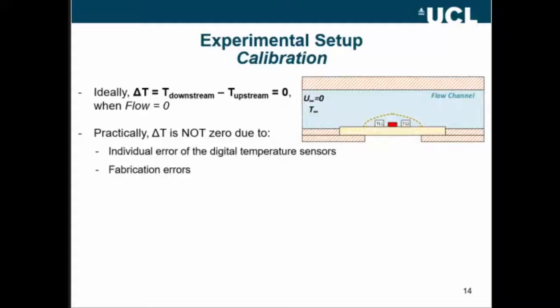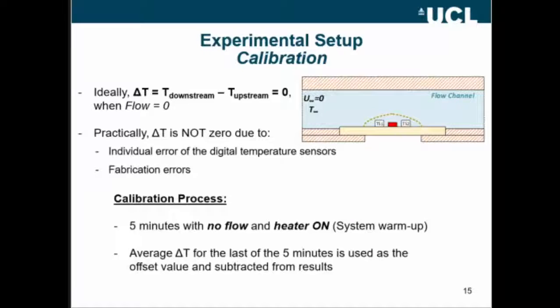The thermal conductance from the heater to the temperature sensors is not the same. So really simple, we just turn the heater on for five minutes, more than enough time for the system to warm up, and we take the last minute to calculate an offset value that we can subtract from the results.